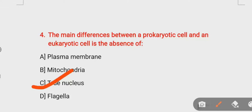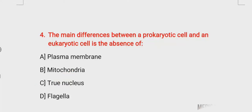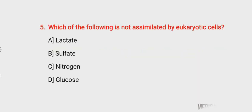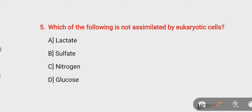Question number five: which of the following is not assimilated by eukaryotic cells? Option A: lactate, option B: sulfate, option C: nitrogen, option D: glucose. The right answer is option C, nitrogen. Nitrogen is not assimilated by eukaryotic cells.